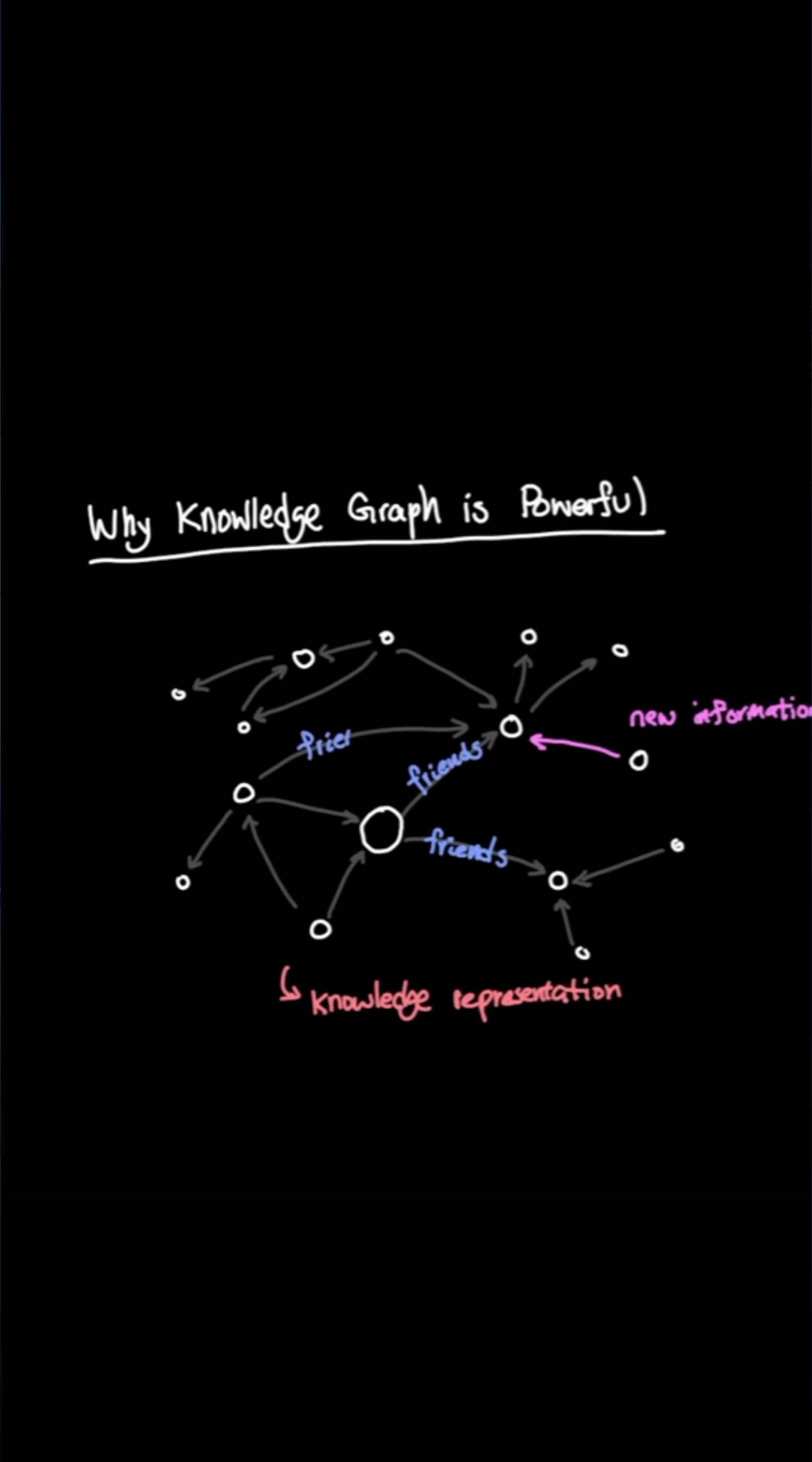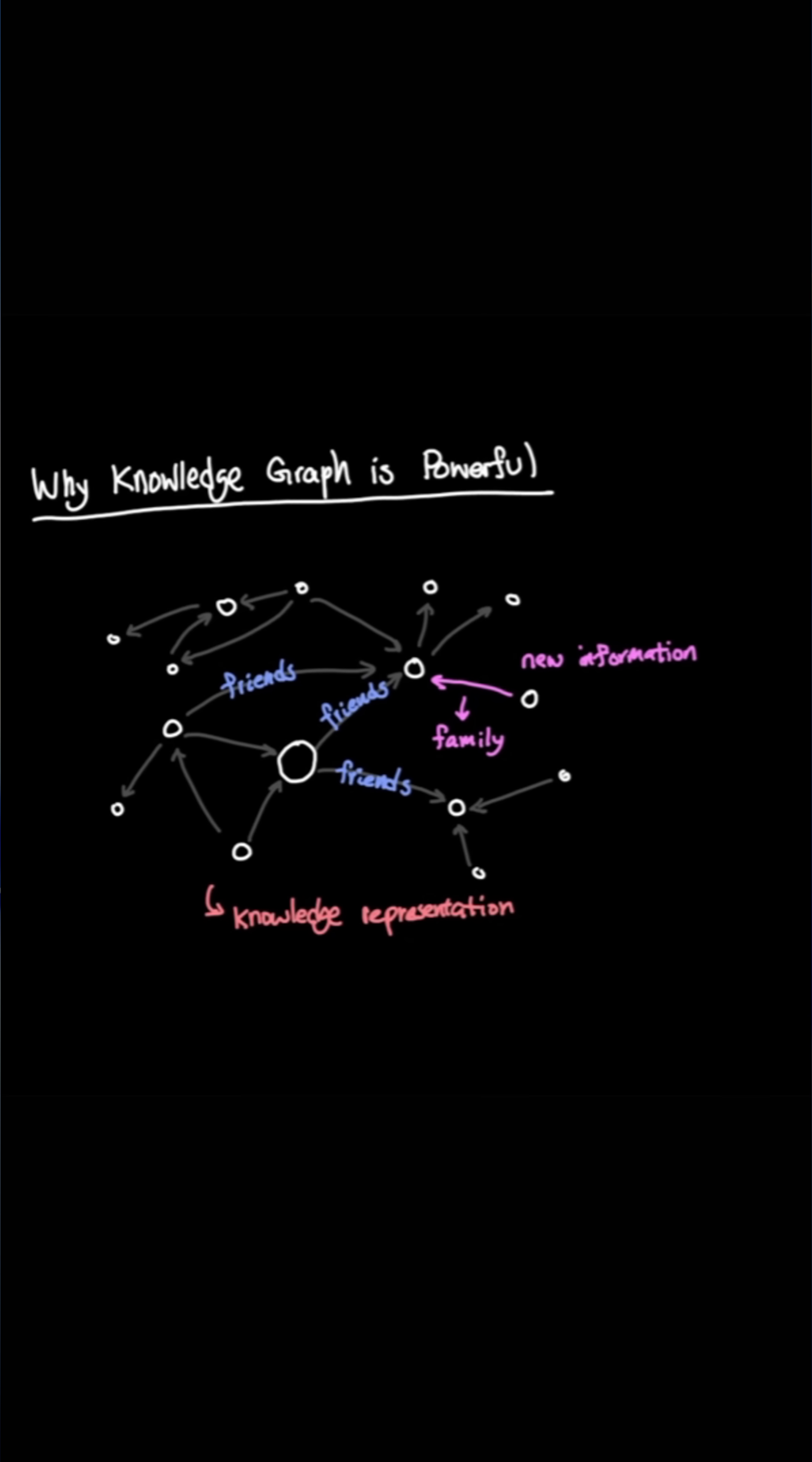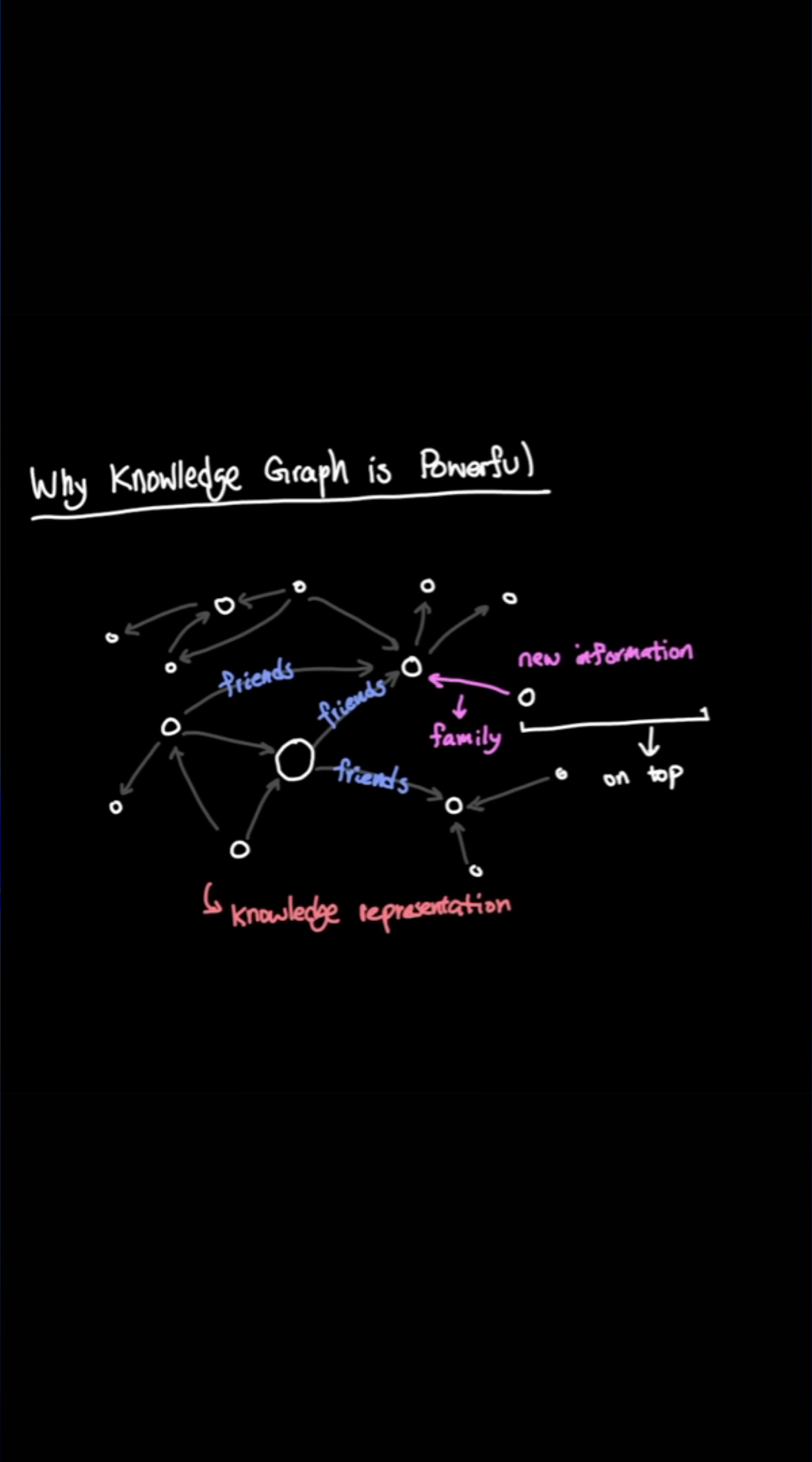For example, if all you tracked before was your friendship with other people, and now you have new information that tracks family relationships on top, you can simply add a new edge on top of the existing knowledge structure without breaking the existing friendship graph.